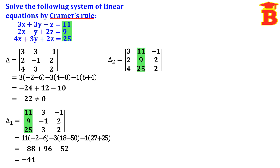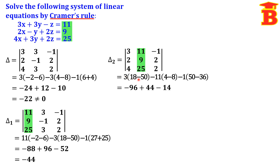Next find del 2. Del 2 means replace the second column by the constants 11, 9, 25, keeping the first column 3, 2, 4 and third column minus 1, 2, 2 the same. Expanding: 3 into minus 32 is minus 96; minus 11 into minus 4 is plus 44; minus 1 into 14 is minus 14. Adding these gives del 2 equals minus 66.